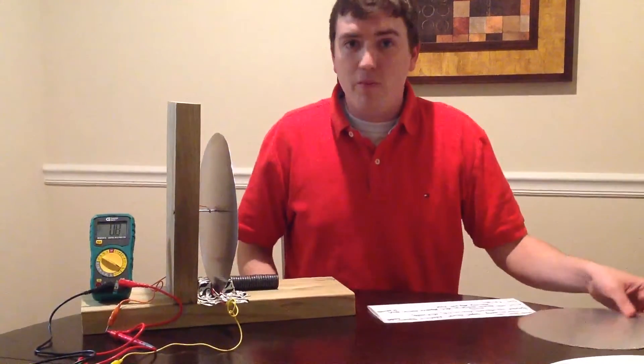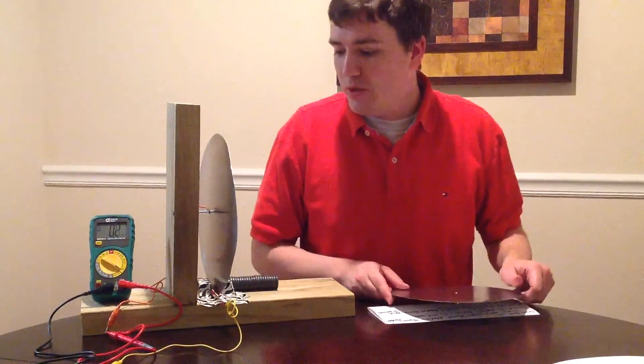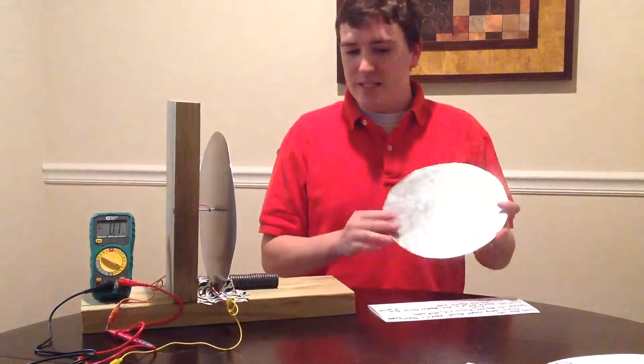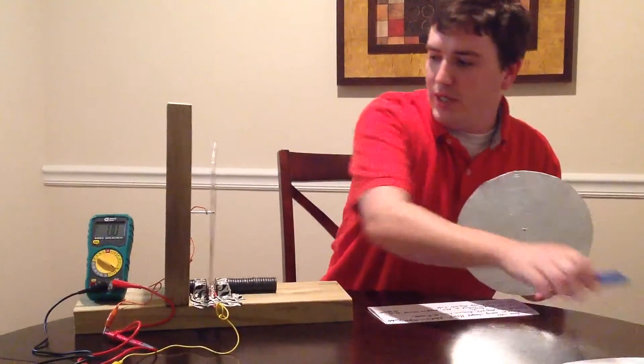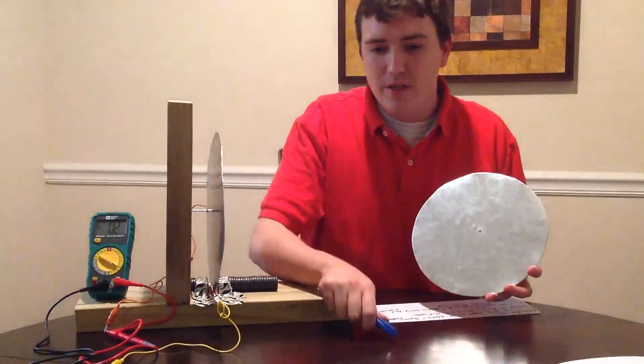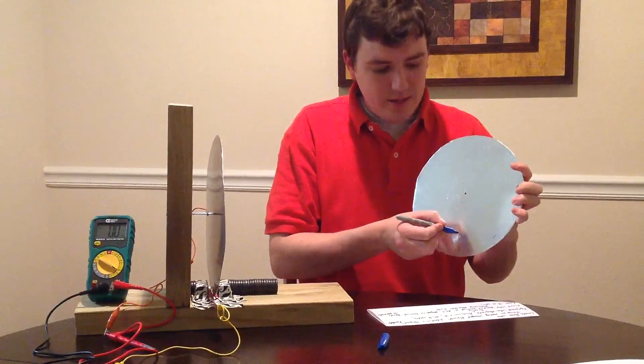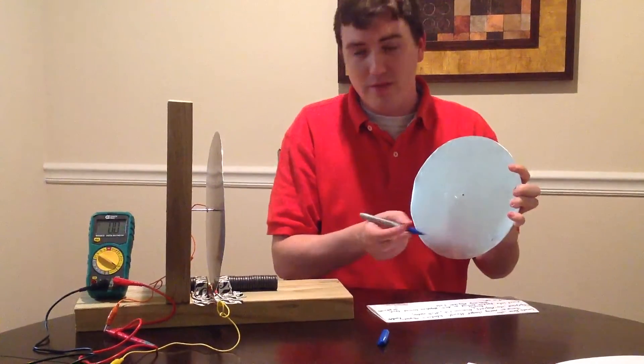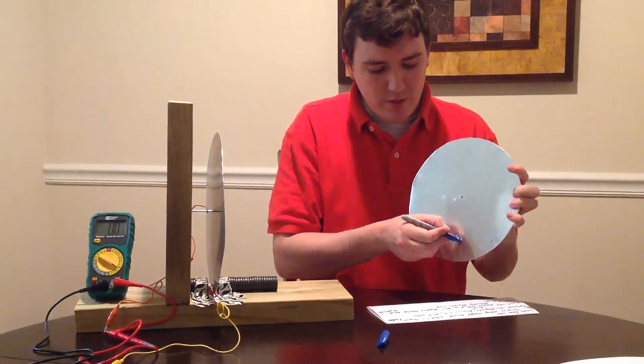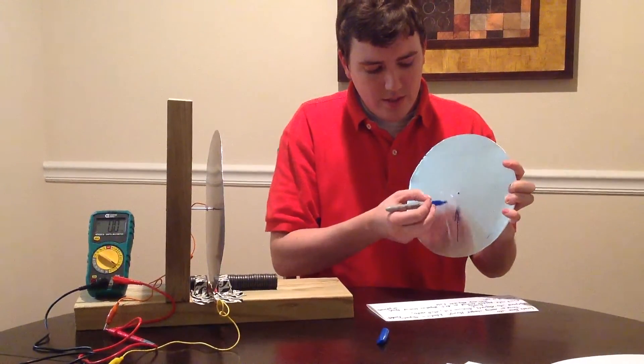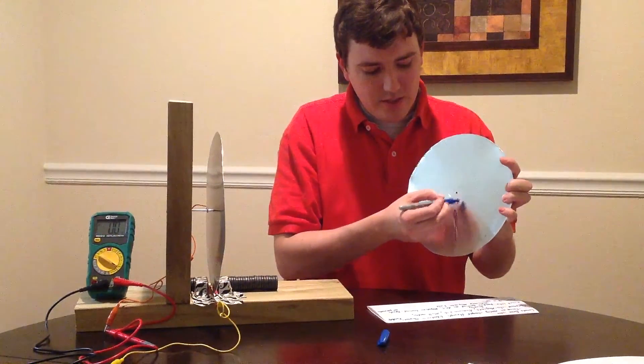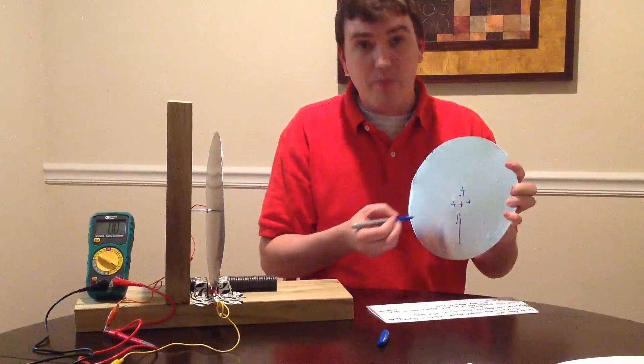What is happening on the homopolar generator is as this device spins, we have a charge distribution starting to occur where there's a force on the positive charges, though the negative charges are the charge carriers, going in the upwards direction, thus giving the center of the disc a net positive charge.